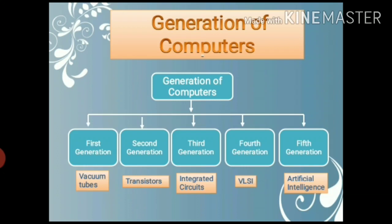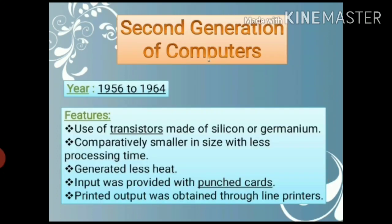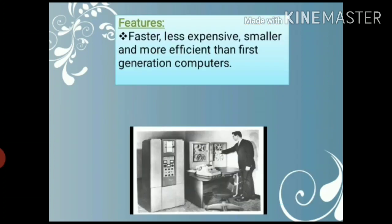Let's begin with the 2nd generation. 2nd generation computers were developed in 1956 to 1964. Transistors were used in this generation. Comparatively smaller in size with less processing time — meaning it took less time to process data. Input was given by punch cards and output was obtained by line printers. It was faster and less expensive than 1st generation computers.